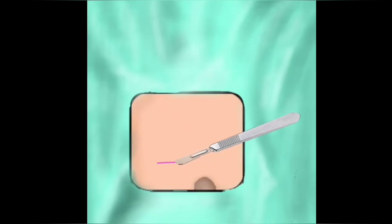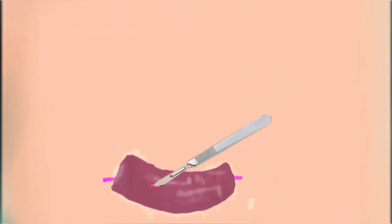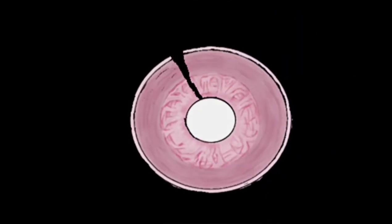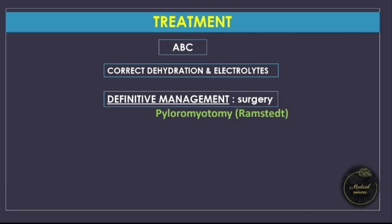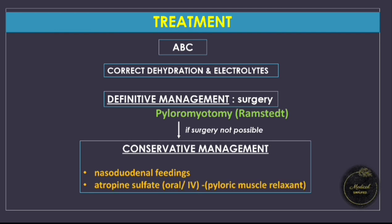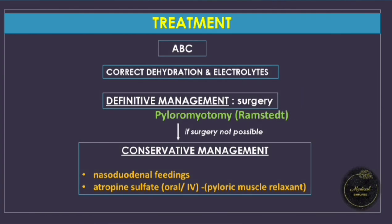The surgery is done via an incision in the right upper abdomen. The hypertrophied pylorus is identified and the muscle layers dissected down to the mucosa, allowing easier food passage and increased pyloric diameter. If surgery cannot be carried out, the patient is managed conservatively: feeding via a nasoduodenal route to bypass the hypertrophied part, or atropine administered orally or intravenously to cause pyloric muscle relaxation. However, these cannot provide complete relief, so surgery following patient stabilization remains the main treatment modality.